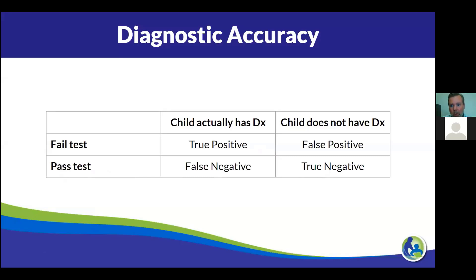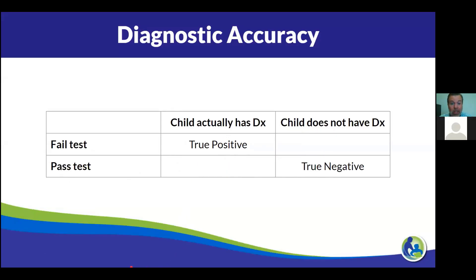You can also get it wrong — you can get false positives and false negatives. A child can fail a test and not have a diagnosis, or pass the test and actually have a diagnosis. What we're really shooting for is: if they fail the test, they have a diagnosis; if they pass it, they do not.